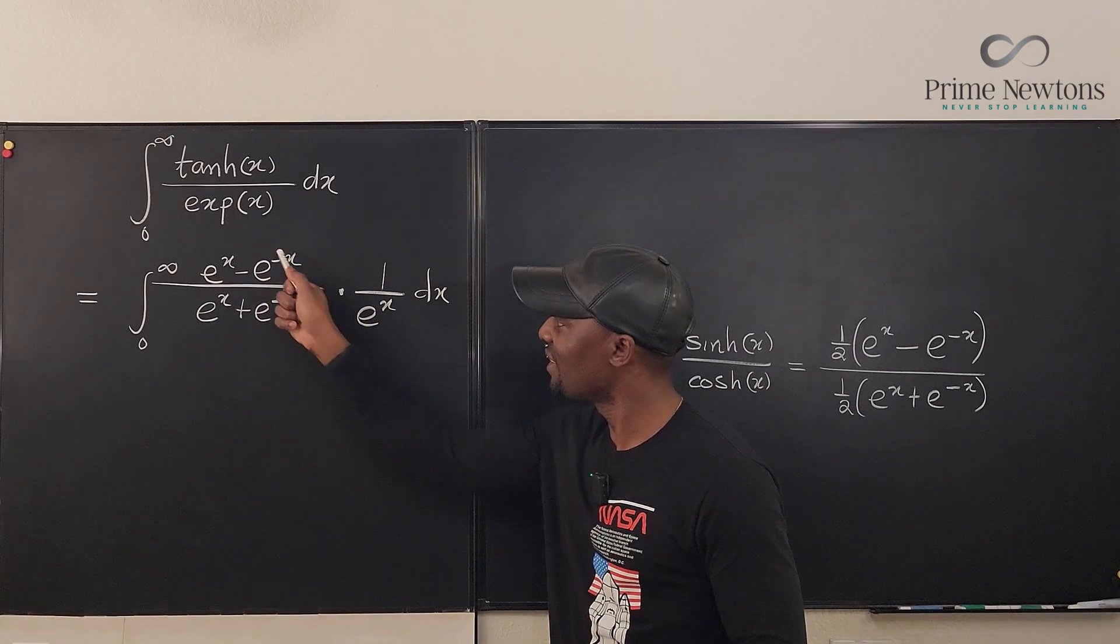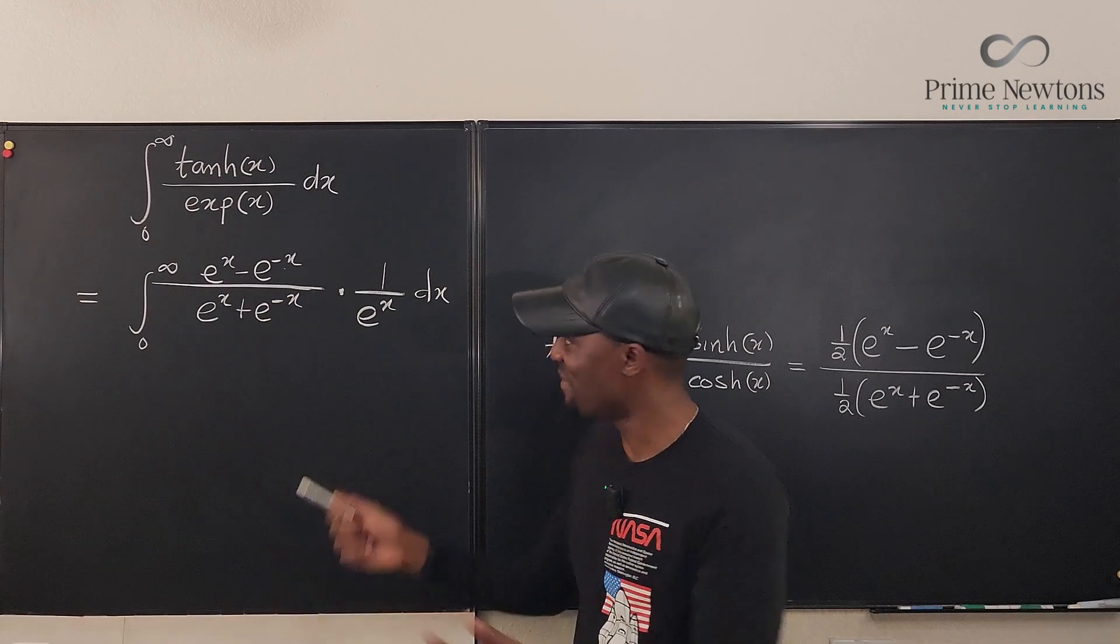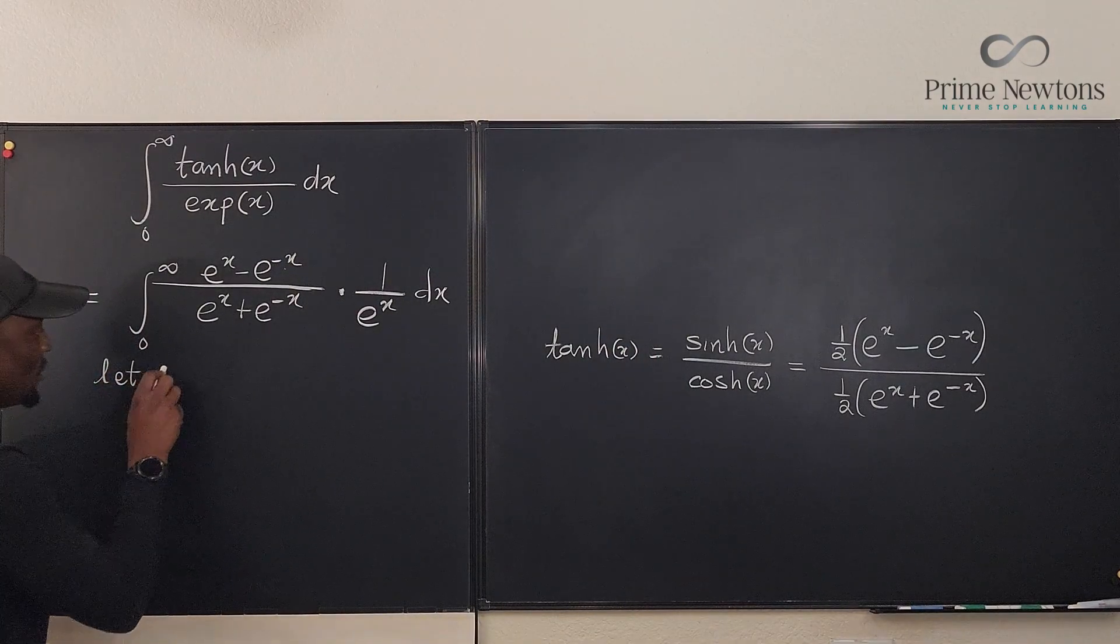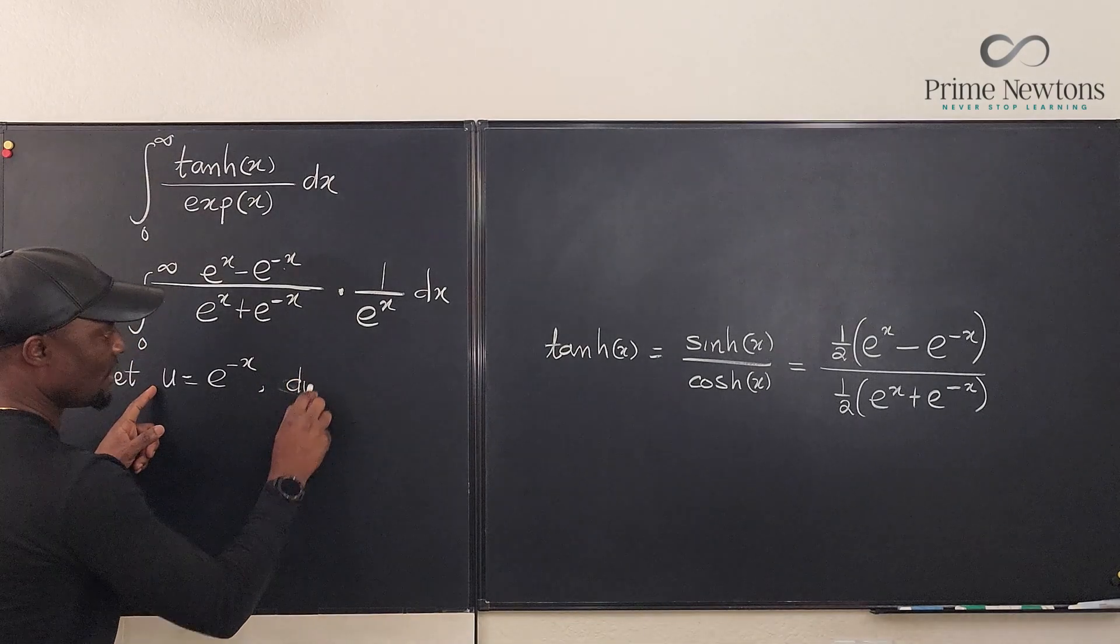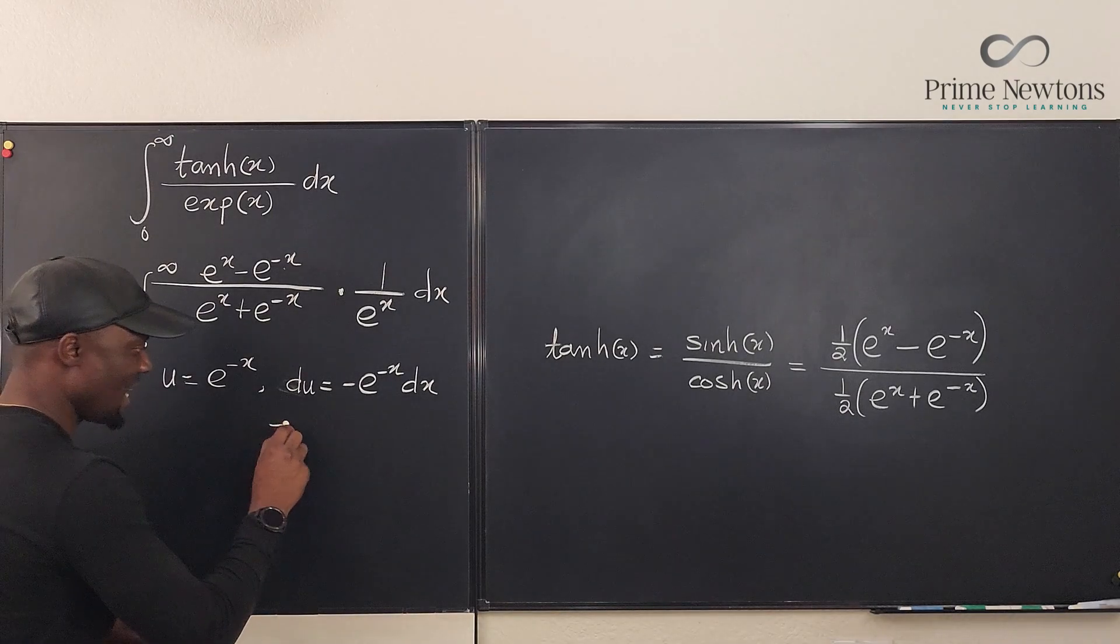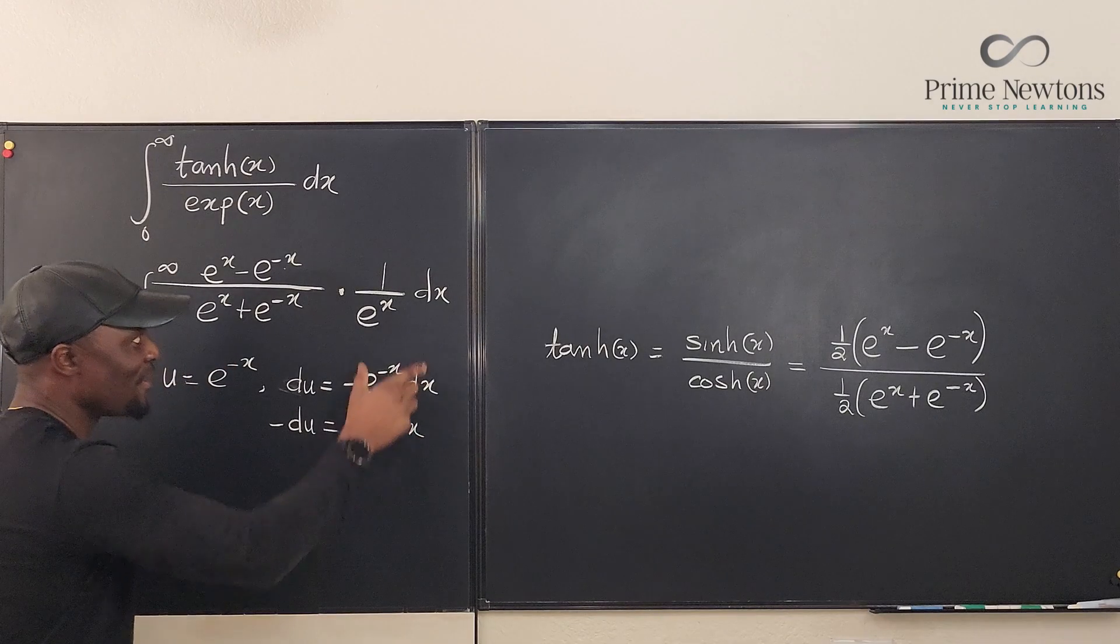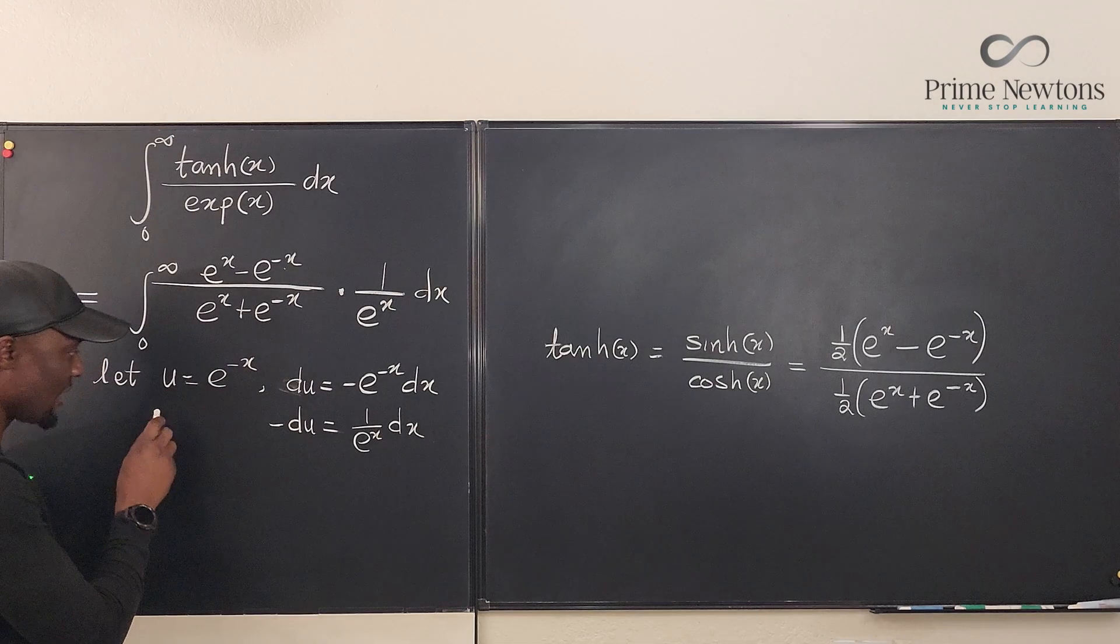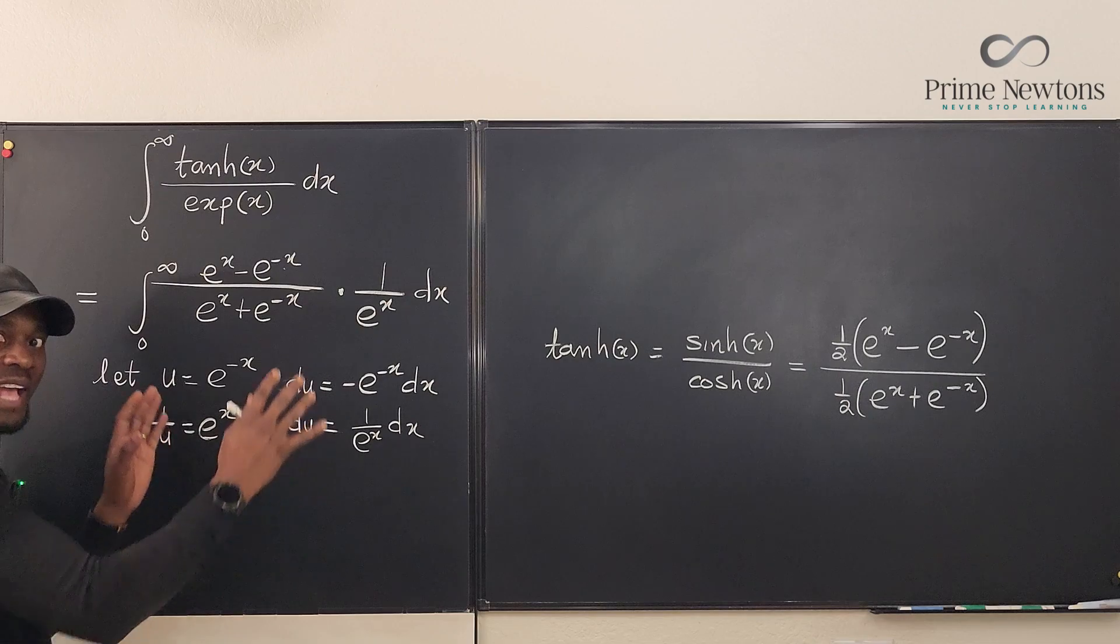One over e to the x is this guy. And when you take the derivative of this function, this is going to show up because this guy will always show up when you take its derivative and it's going to show up as this. And that way I can get rid of everything. So watch this. I'm going to say, let u be equal to e to the negative x so that du, if I take the derivative, du is going to be negative e to the negative x dx. I'm going to move this negative sign here so that negative du is going to be one over e to the x dx.